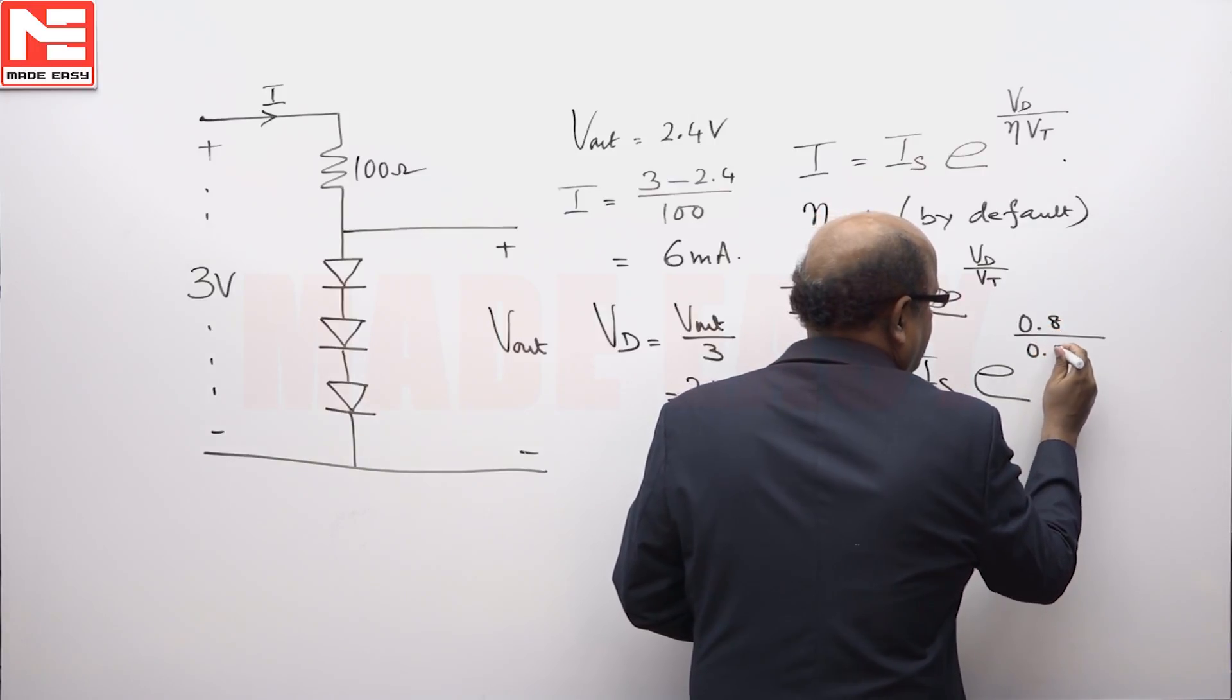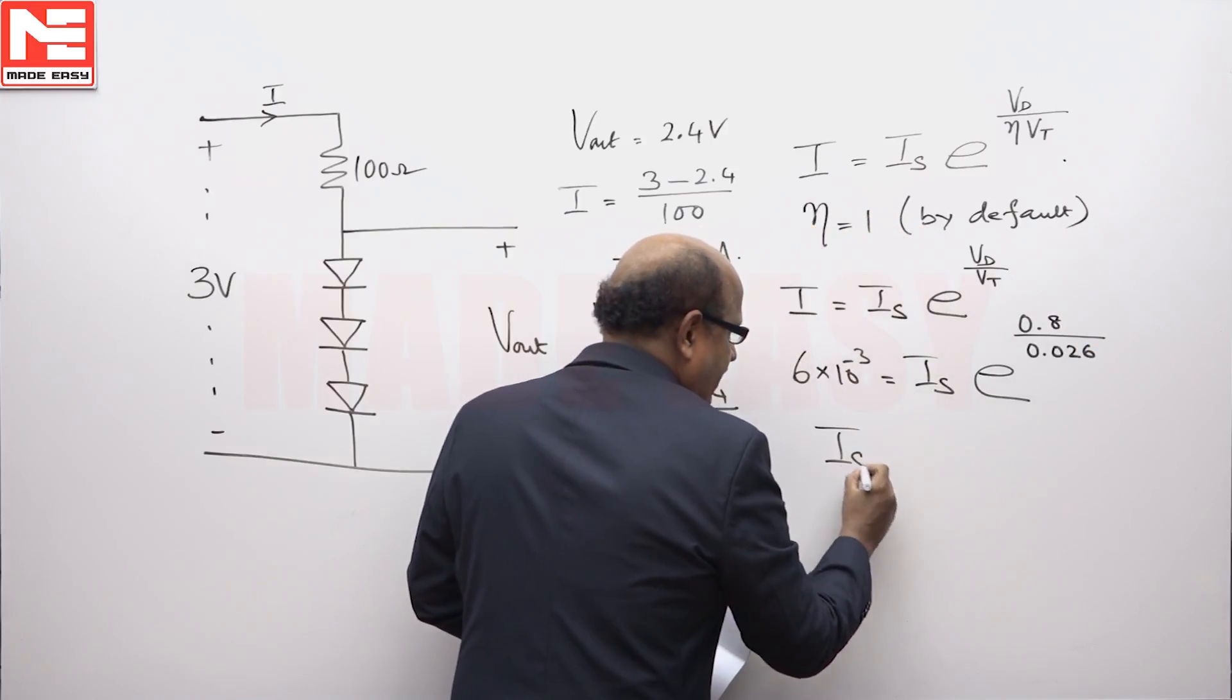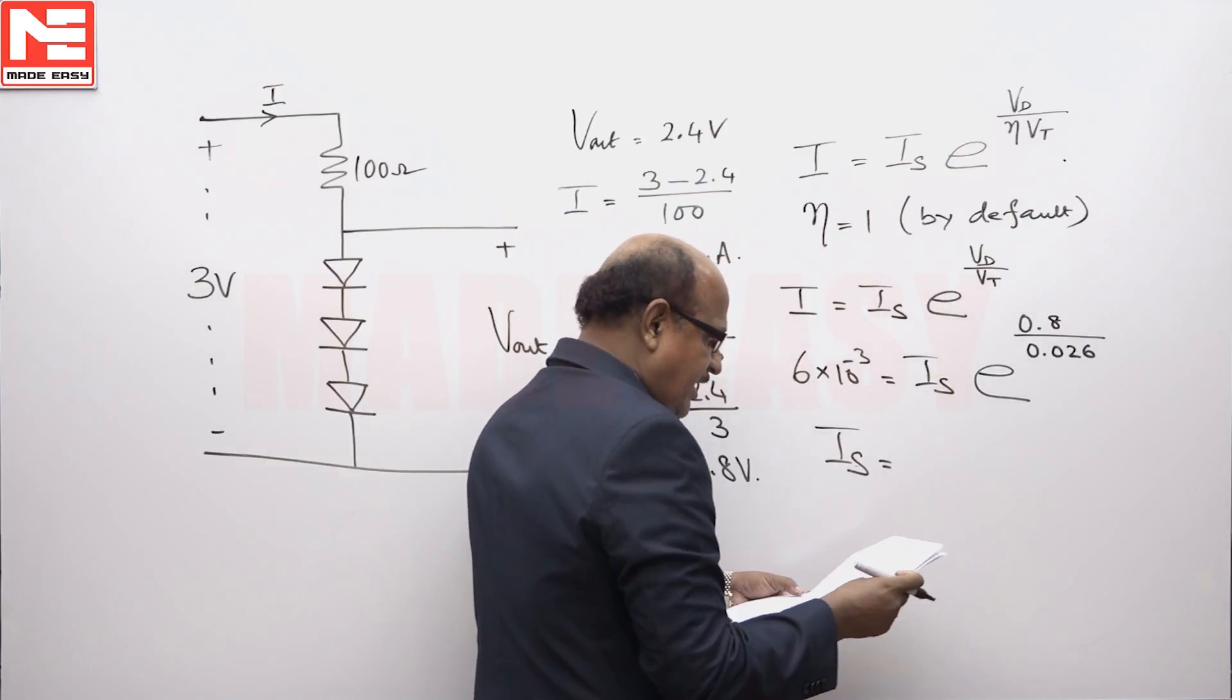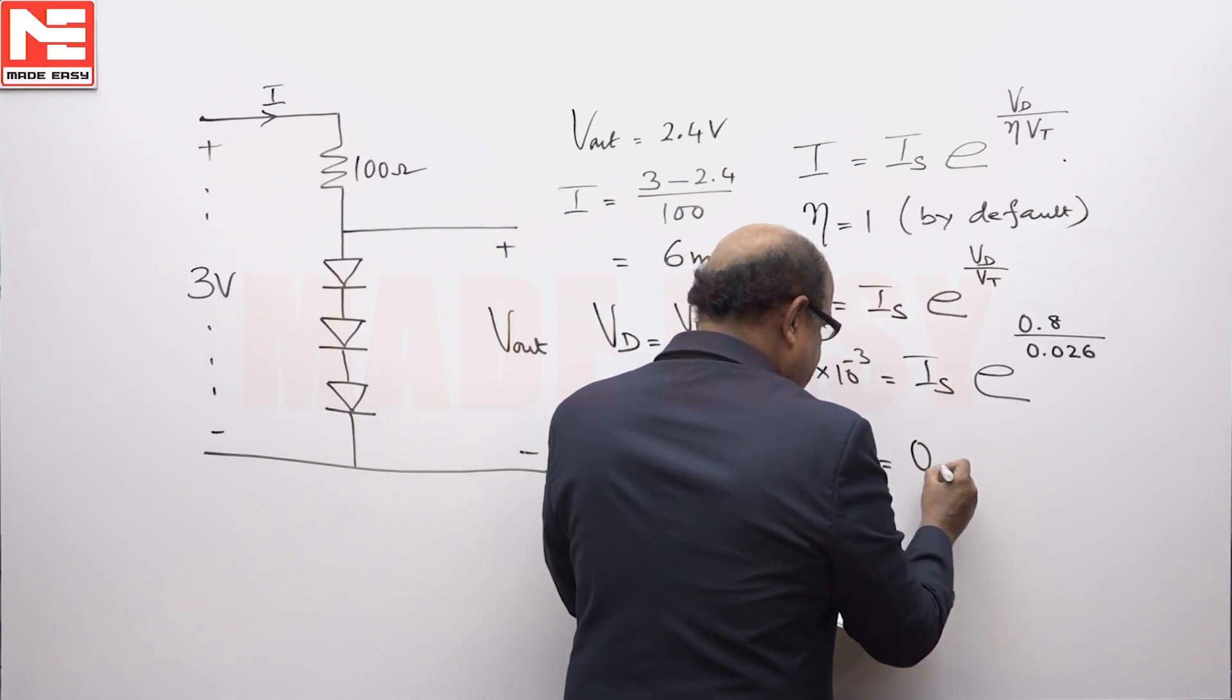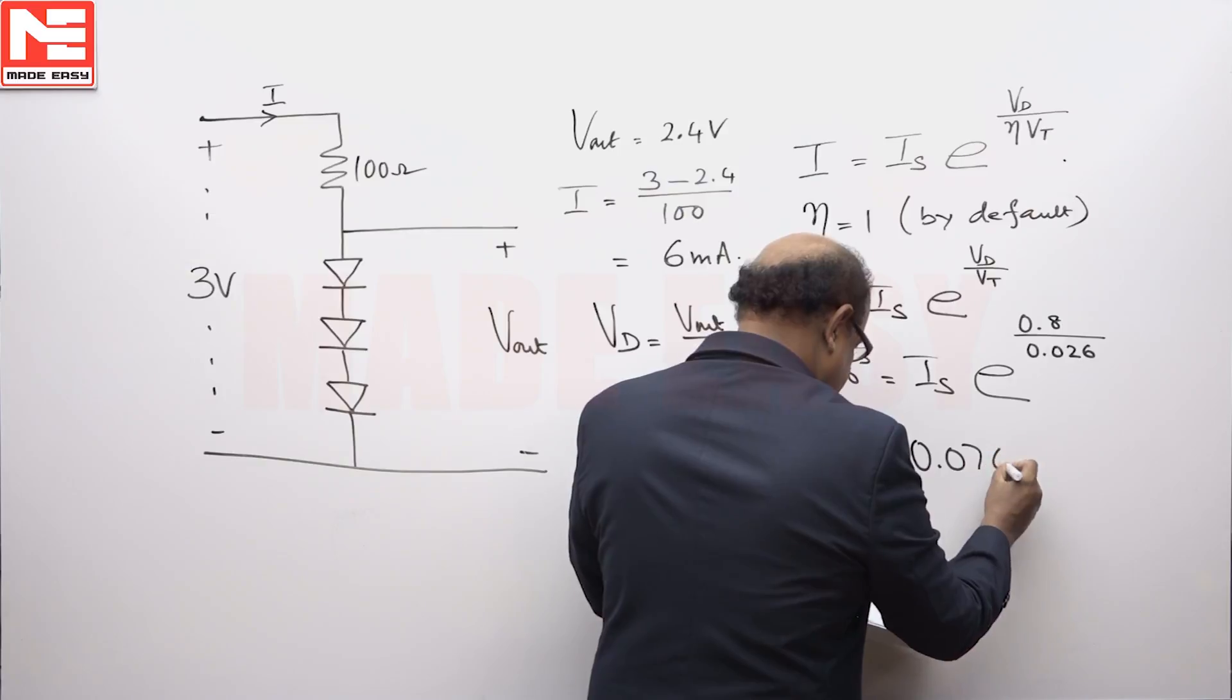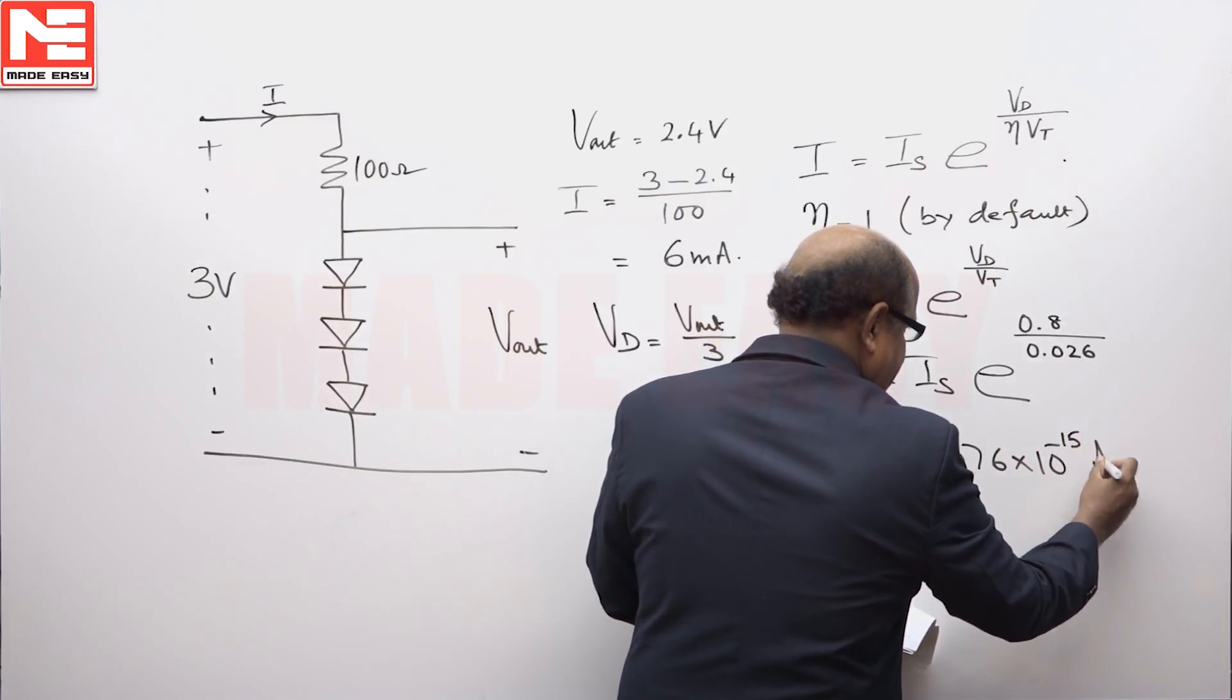With V_t equal to 0.026, solving this equation, the reverse saturation current I_s will be equal to 0.076 times 10 to the minus 15 amperes.